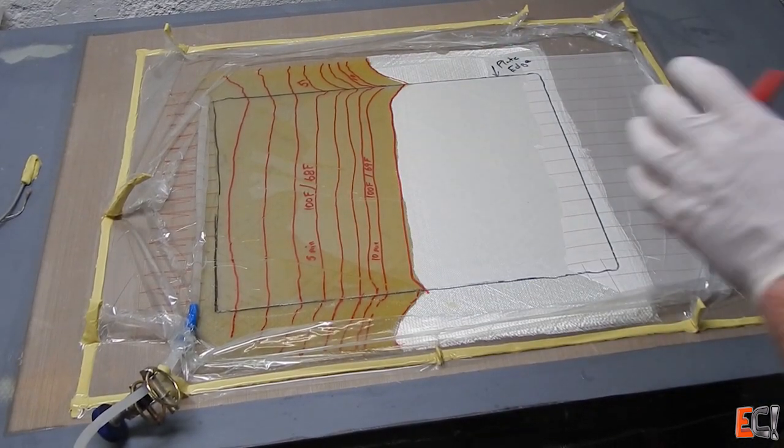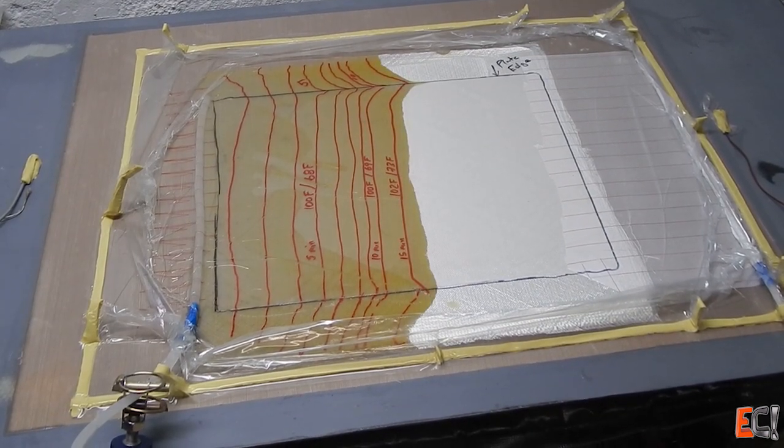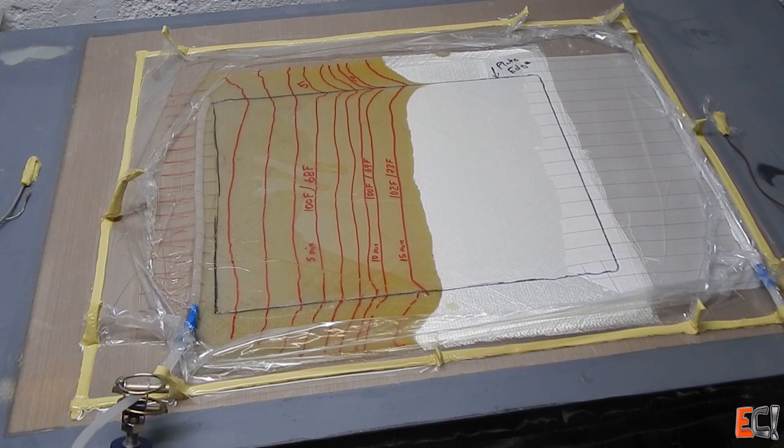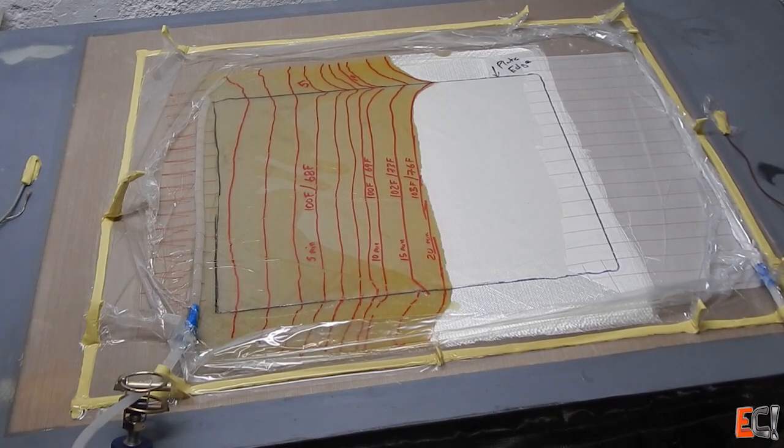But you can definitely see it closing down. I would switch to marking every five minutes. And right about here reaching the gel time of the resin. And you can see it turn yellow on the front as it starts to gel.